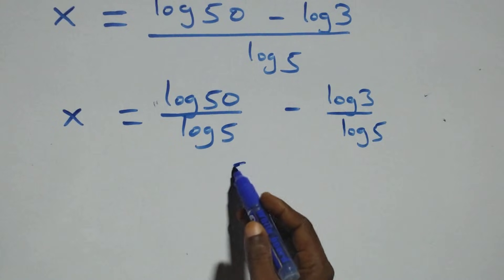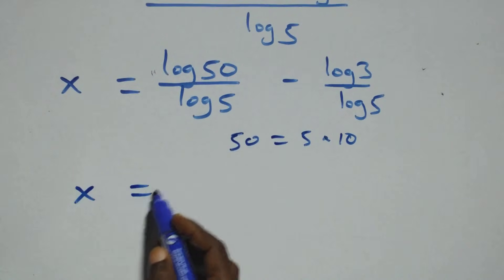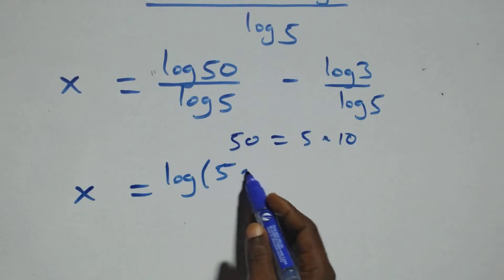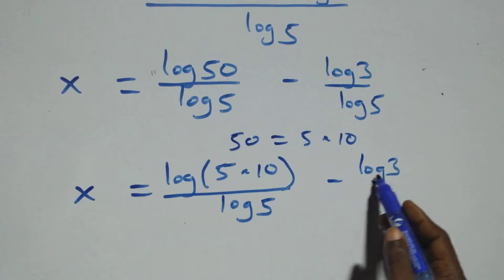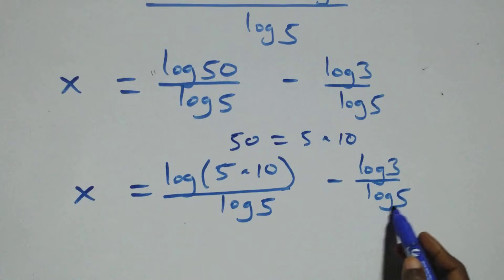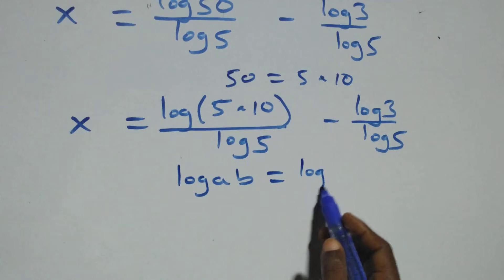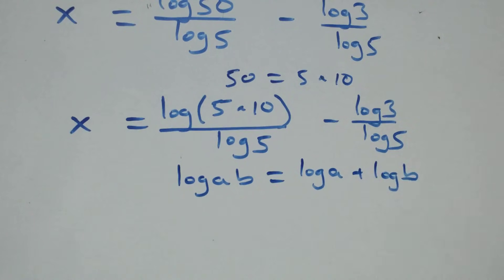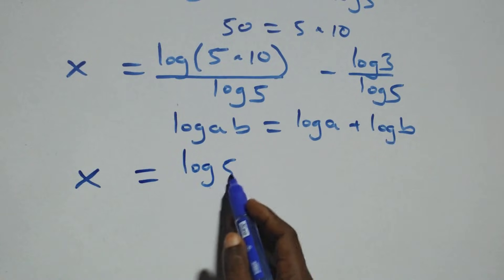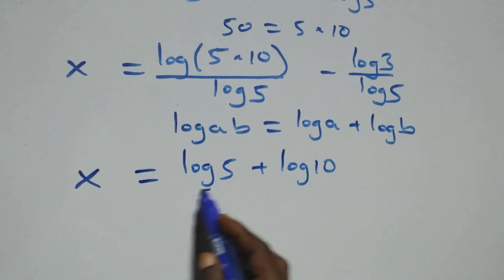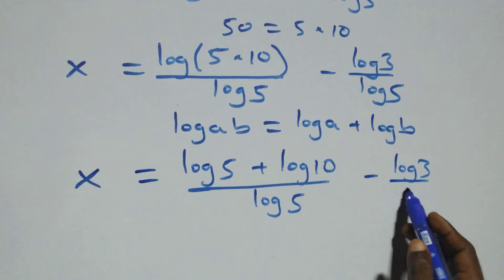Now 50 can be written as 5 times 10, so we have log of 5 times 10 over log 5, minus log 3 over log 5. This follows that log of a times b is the same as log a plus log b. So we have x equals log 5 plus log 10, all over log 5, minus log 3 over log 5.